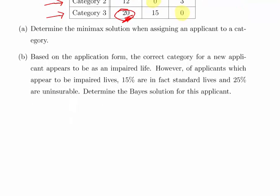Based on the application form, the correct category for a new applicant appears to be an impaired life. However, of applicants which appear to have impaired lives, 15% are in fact standard lives, 25% are uninsurable, which means 60% are impaired lives. Determine the Bayes solution for this applicant.